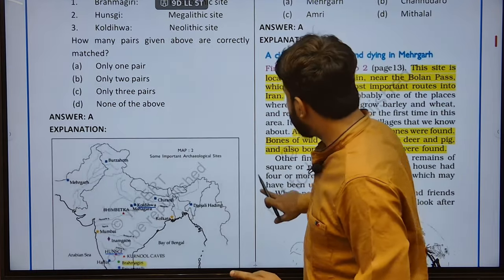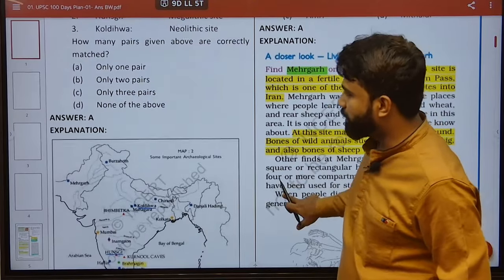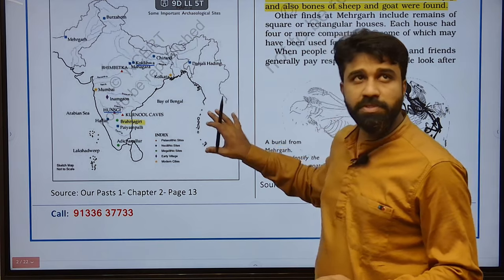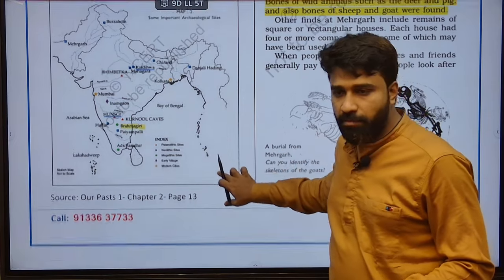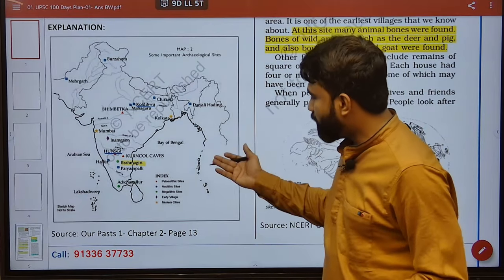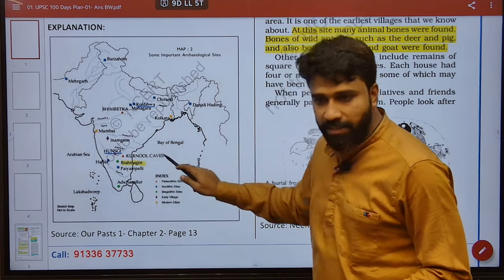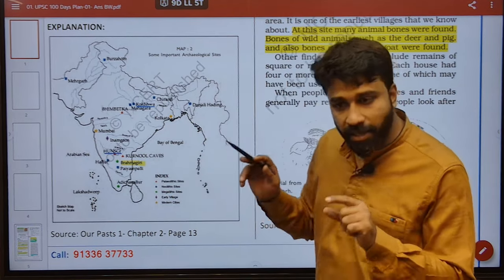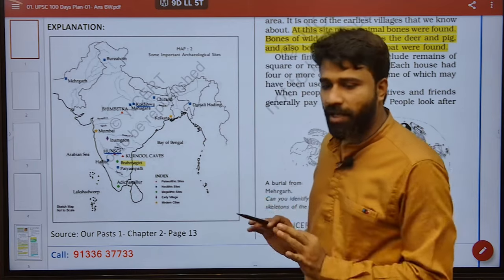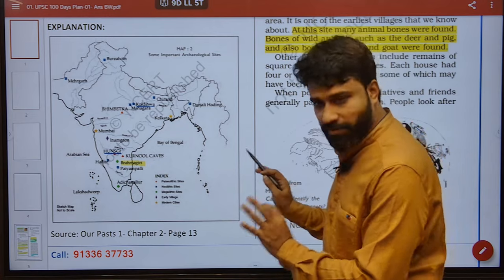Why have we chosen such a question? Because there was a question related to this previously. Here, these are Paleolithic sites — Edmark, Kurnool Caves — it is given in the NCRT 6th class and there were previous year questions taken from this chart only. I will display the previous year questions also which are coming from this one.